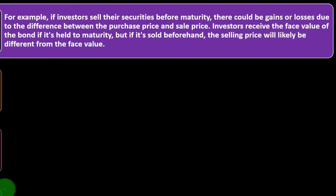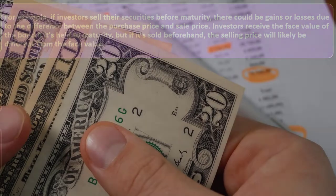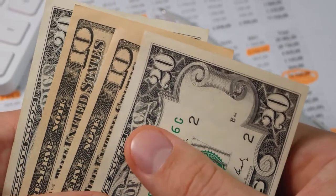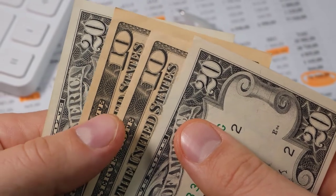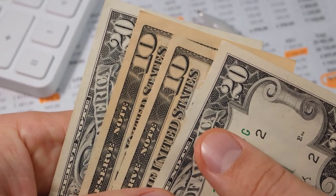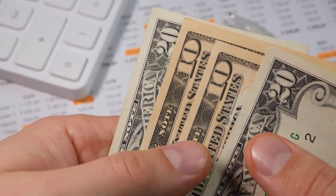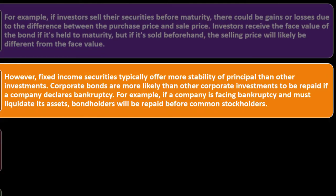Investors receive the face value of the bond if held to maturity, but if sold beforehand the sale price will likely differ from face value. The ability to sell bonds on the market also makes them more liquid — so even a 20-year bond can be accessed if you need cash, which differs from a CD where early withdrawal results in penalties. However, fixed income securities typically offer more stability for principal than other investments.